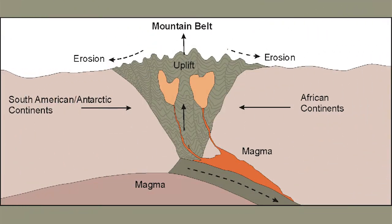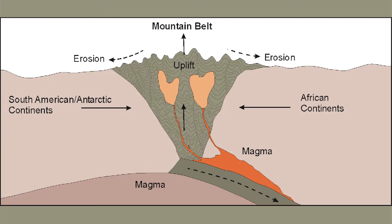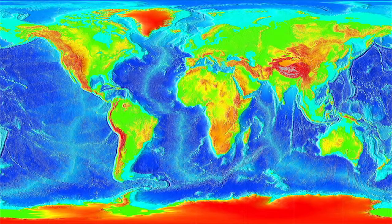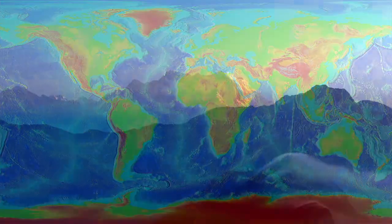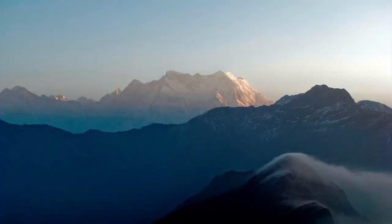Orogeny, Greek for mountain building, is the process in which tectonic movements of Earth's crust or volcanic activities form mountains. Mountains — particularly with a north-south orientation, for example the Sierra Nevada, Rocky Mountains, Appalachian Mountains, Andes, and Urals — disrupt global atmospheric circulation patterns that generally move east-west because of Earth's rotation. Uplifting of mountains also newly exposes rock that undergoes chemical weathering and absorbs carbon dioxide.